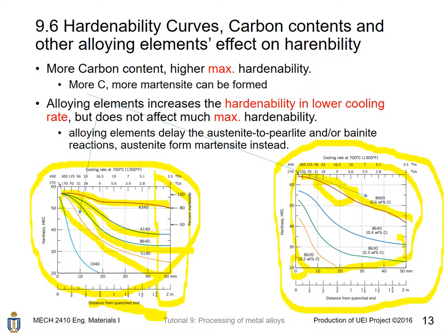Hardenability curves show the effects of carbon content and alloy elements on hardenability. If a steel alloy has more carbon content, it will have a higher maximum hardenability, because martensite is a BCT crystal structure containing iron and carbon atoms — more carbon means more martensite can form. The curve with the highest weight percentage of carbon shows the highest maximum hardenability.